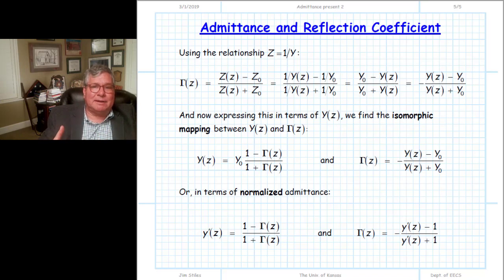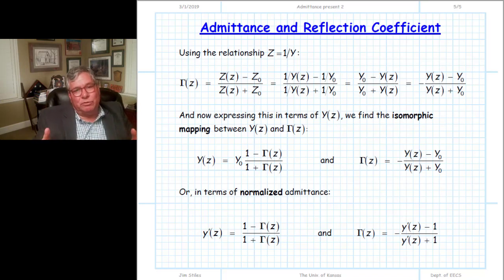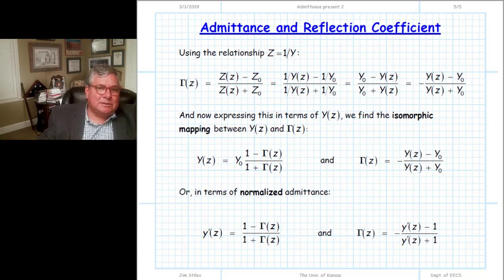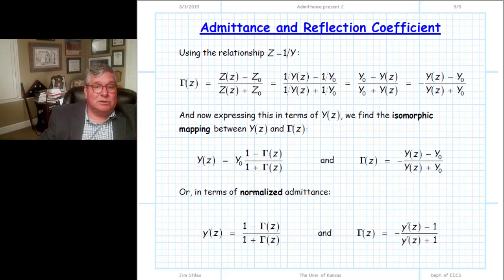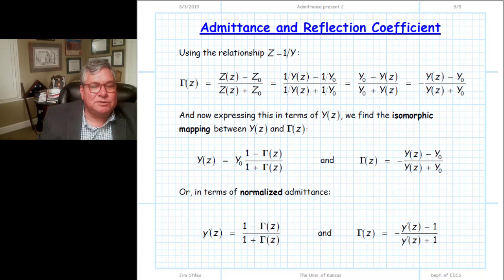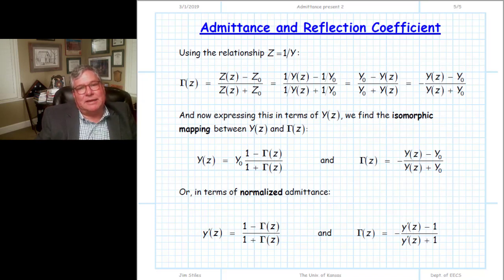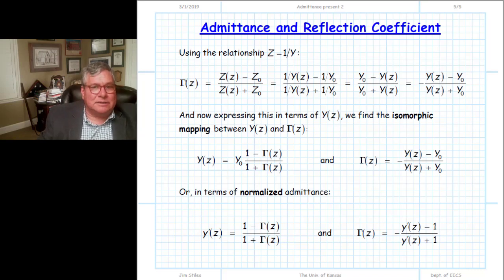So oftentimes, mathematically, it is very helpful to express impedances not in terms of their impedance but in terms of their inverse — in terms of their admittance. It is therefore very helpful to have a Smith chart that plots not the contours of constant resistance and reactance, but instead the contours of constant conductance and constant susceptance.